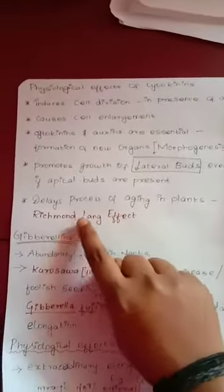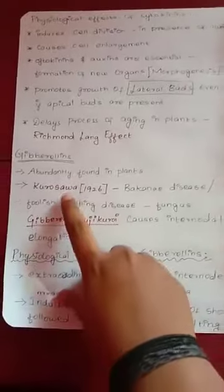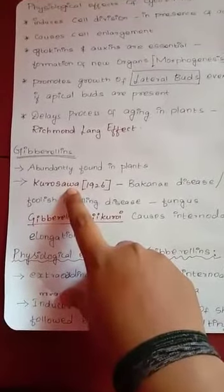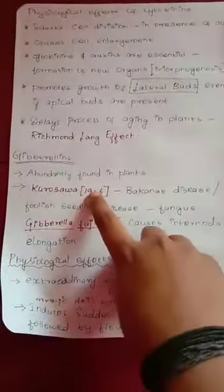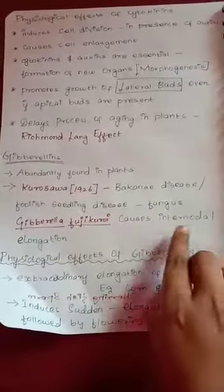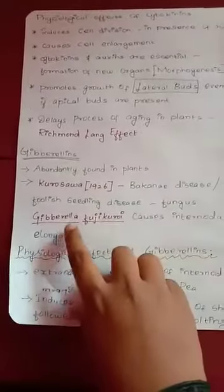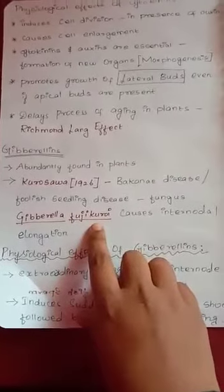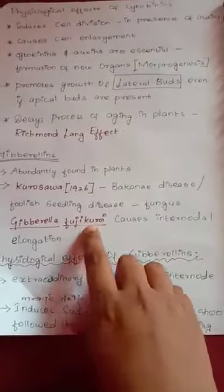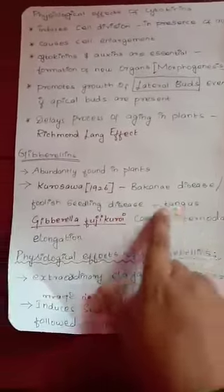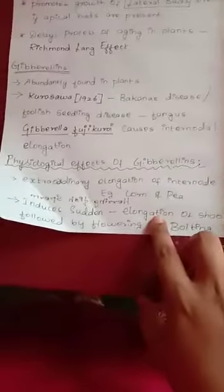Now we're going to see about gibberellins. We saw about auxins and cytokinins, and now gibberellins. Gibberellins were discovered in a fungus, and this fungus causes the bakanae disease, also known as foolish seedling disease, in the internodal region of plants.